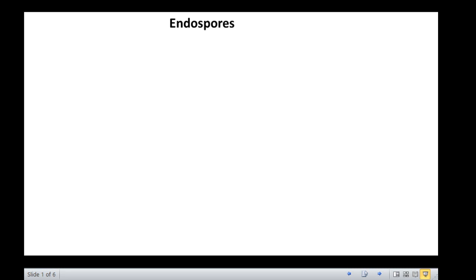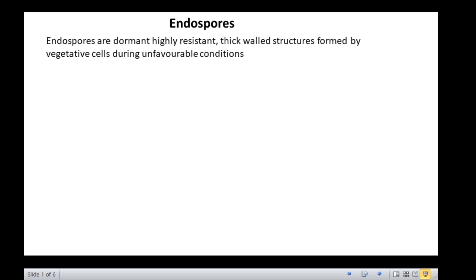In today's module, we will discuss bacterial endospores, which are dormant, highly resistant, thick-walled structures formed by vegetative cells during unfavorable conditions, mainly for survival.